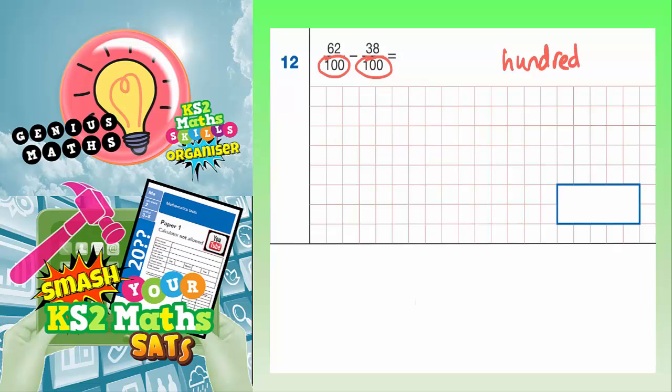So our answer is also going to be in hundredths, so we might as well in our answer straight away put out of 100. What really matters now is what 62 take away 38 is. So if I work out 62 take away 38, possibly do it in your head, but I'm going to use a column method just to make sure.